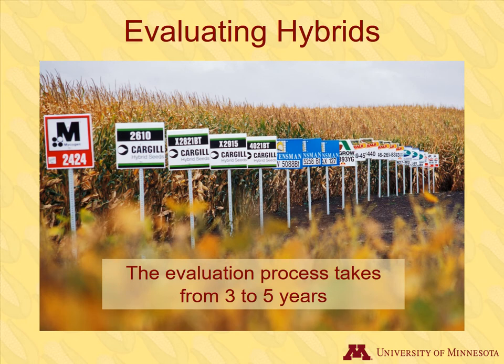Hybrids throughout the process are evaluated based on the goals of the corn breeder for traits such as yield, pest resistance, and other factors mentioned earlier in this module. This usually takes about 3 to 5 years.